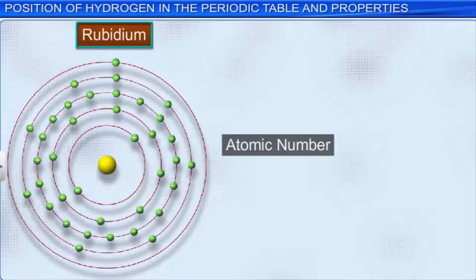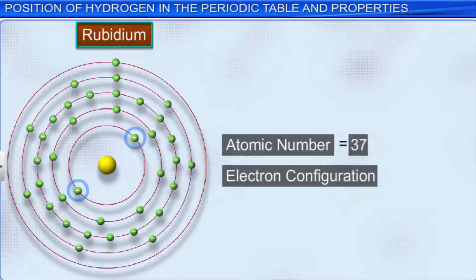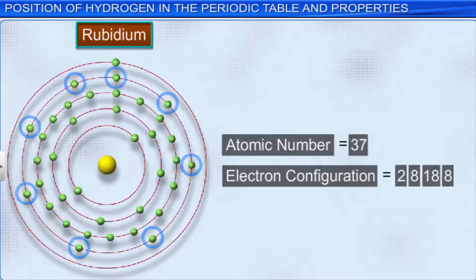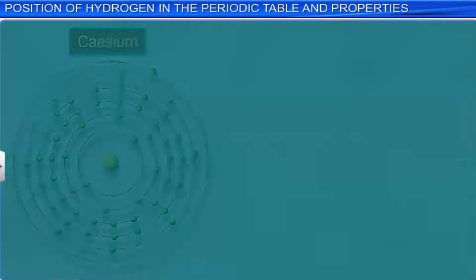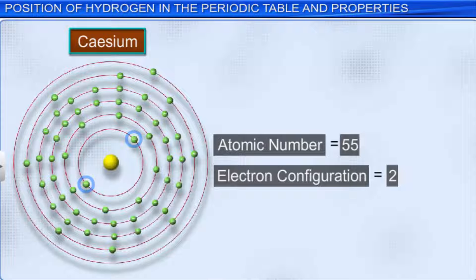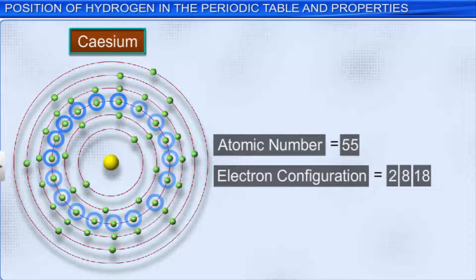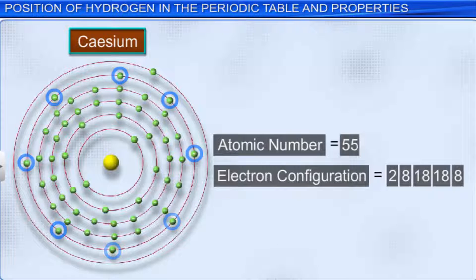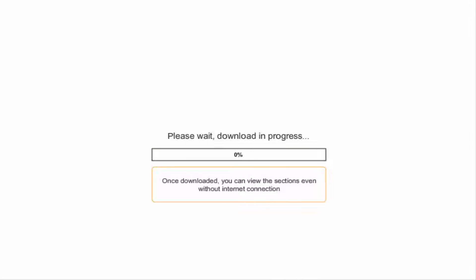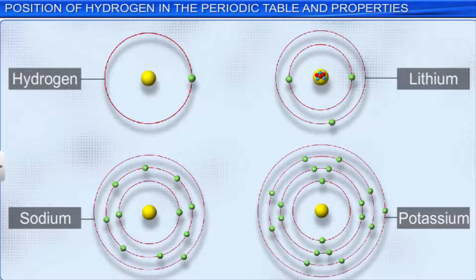Rubidium with atomic number 37 has the electron configuration of 2, 8, 18, 8, 1. All these elements have one electron in their valence shell. Valency: All alkali metals, including hydrogen, have a valency of 1.